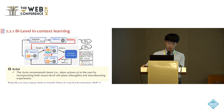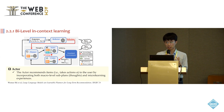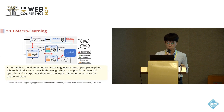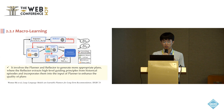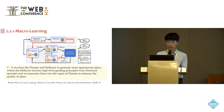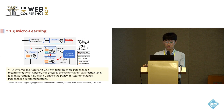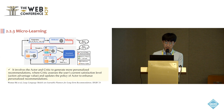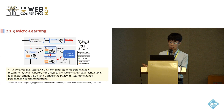Based on this workflow, we introduce two learning mechanics: macro-learning and micro-learning. For macro-learning, it consists of a planner module and a reflector module that generate more appropriate plans, where the reflector extracts high-level guiding principles from historical episodes and incorporates them into the planner's input to enhance plan quality. For micro-learning, it involves the actor and critic module to generate more personalized recommendations, where the critic module assesses the user's current satisfaction level and updates the actor's policy.